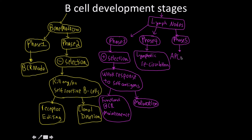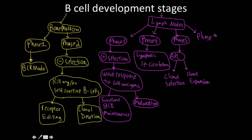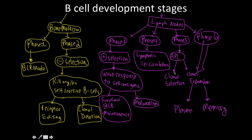In phase five, the immature B cell meets an antigen-presenting cell, which gives us two consequences: clonal selection and then clonal expansion. Phase six connects to the process of clonal expansion, and this is where we're differentiating into plasma cells and memory cells. Some become plasma cells and some become memory cells after the infection takes place. Those are the six stages of B cell development, which we'll be discussing further in the next series of videos.